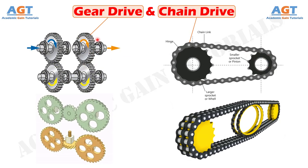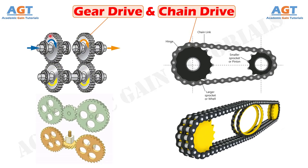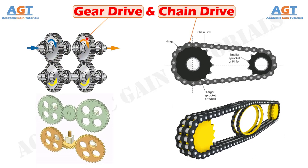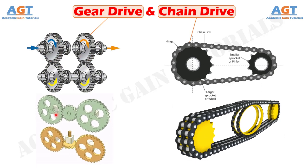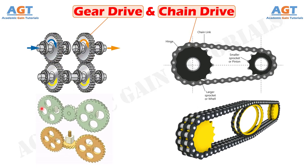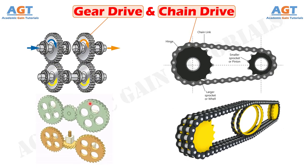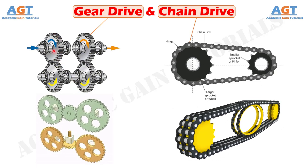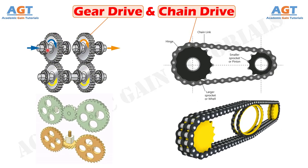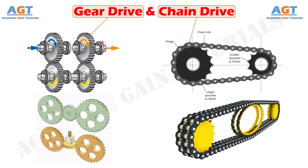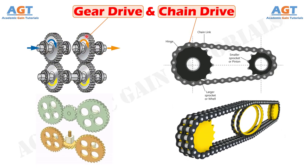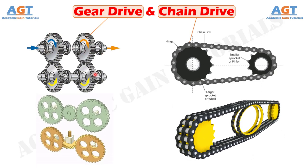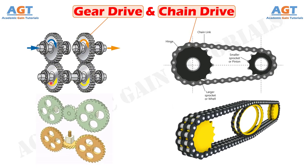In the case of gear drive, power and motion are transferred from one shaft to another through successive engagement and disengagement of teeth of two mating gears. Teeth are cut on both gears, and one gear is mounted on the driving shaft while the other gear is mounted on the driven shaft. There is no requirement of any ancillary element other than the two mating gears.